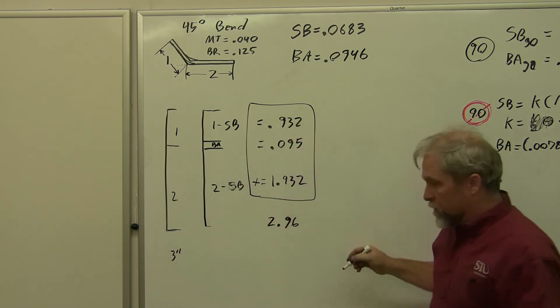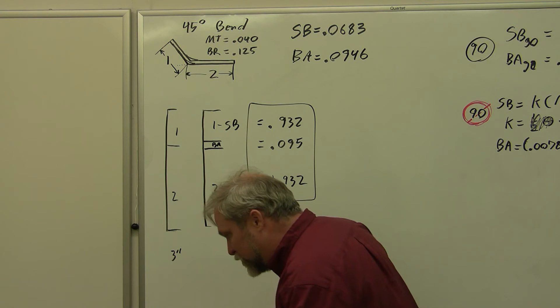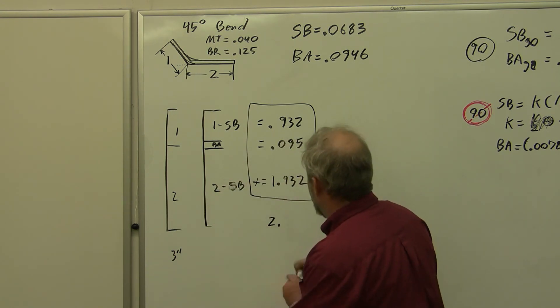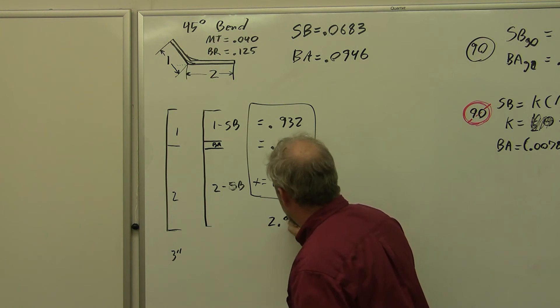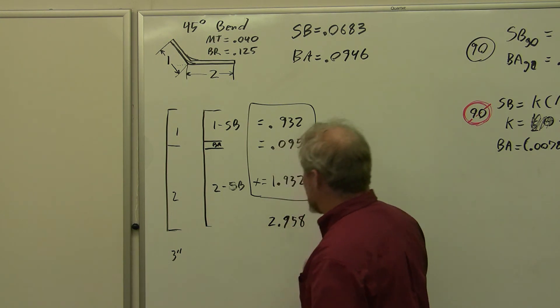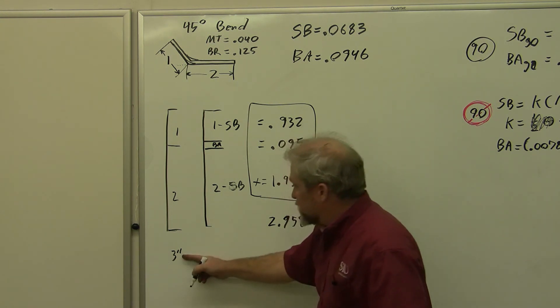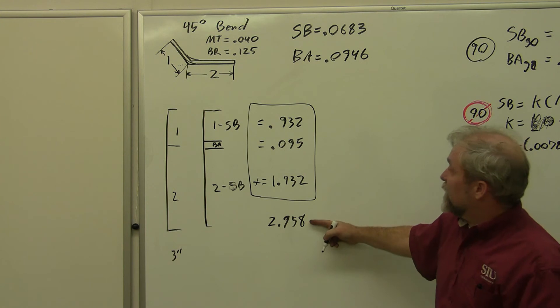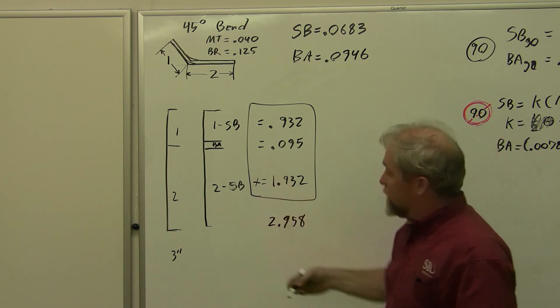When I add all of these numbers together, I'm going to get the total amount. 0.9317 plus 0.095 plus 1.9317 gives me a total of 2.96. Rounding to three places, let's keep one more place. 2.958. And notice that's a little less than our three. We didn't make a very big angle, so it's just a little bit less.